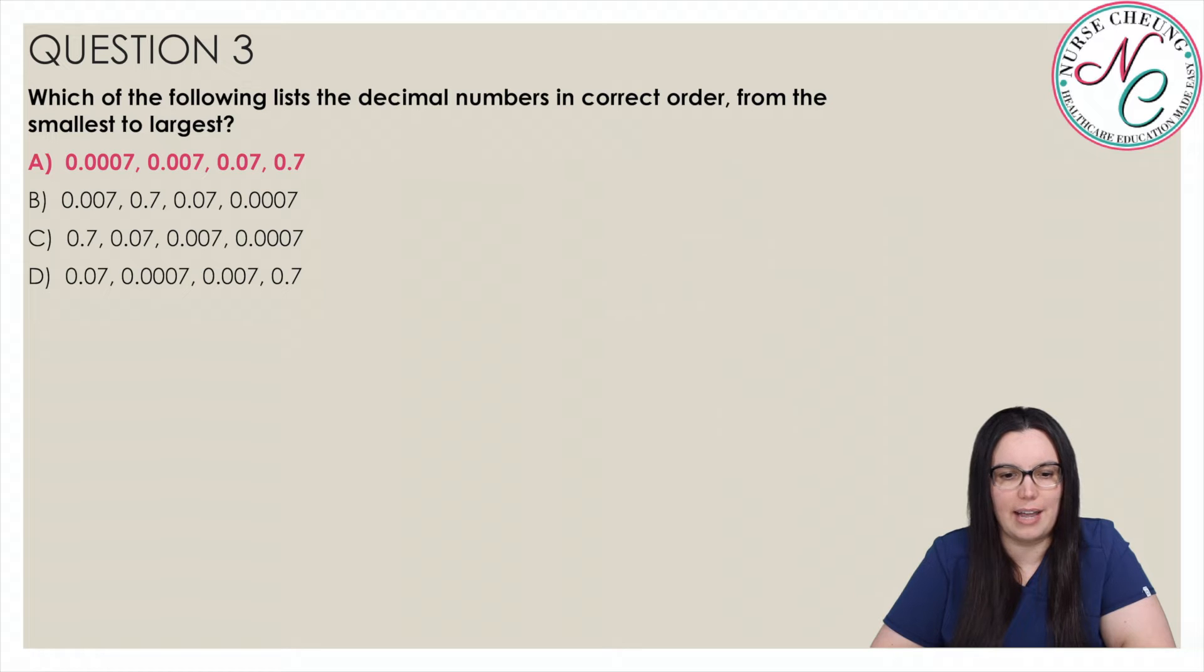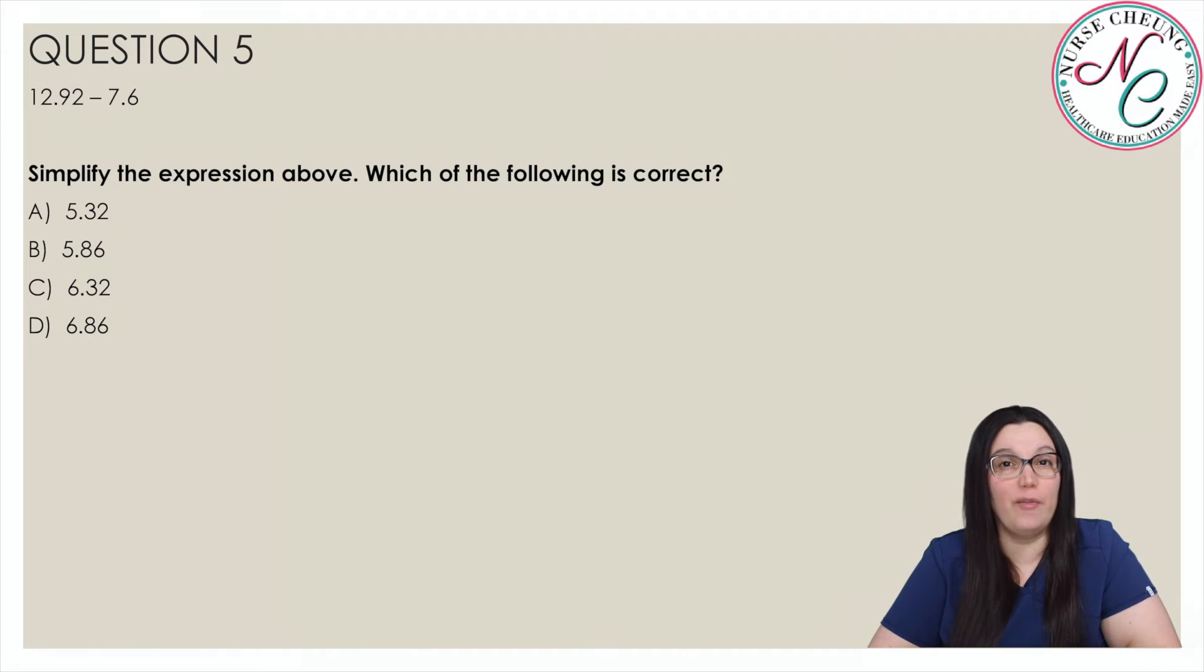while 0.007 and 0.0007 have zeros in the hundredths place. The number 0.007 is larger than 0.0007, making choice A the only correct answer.